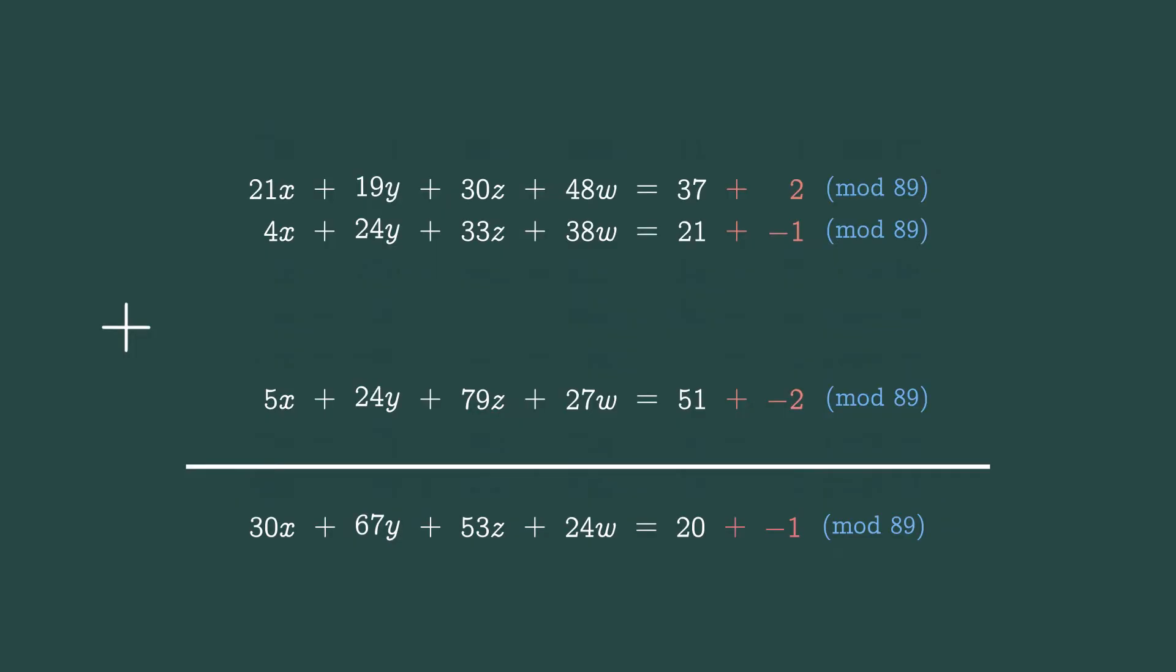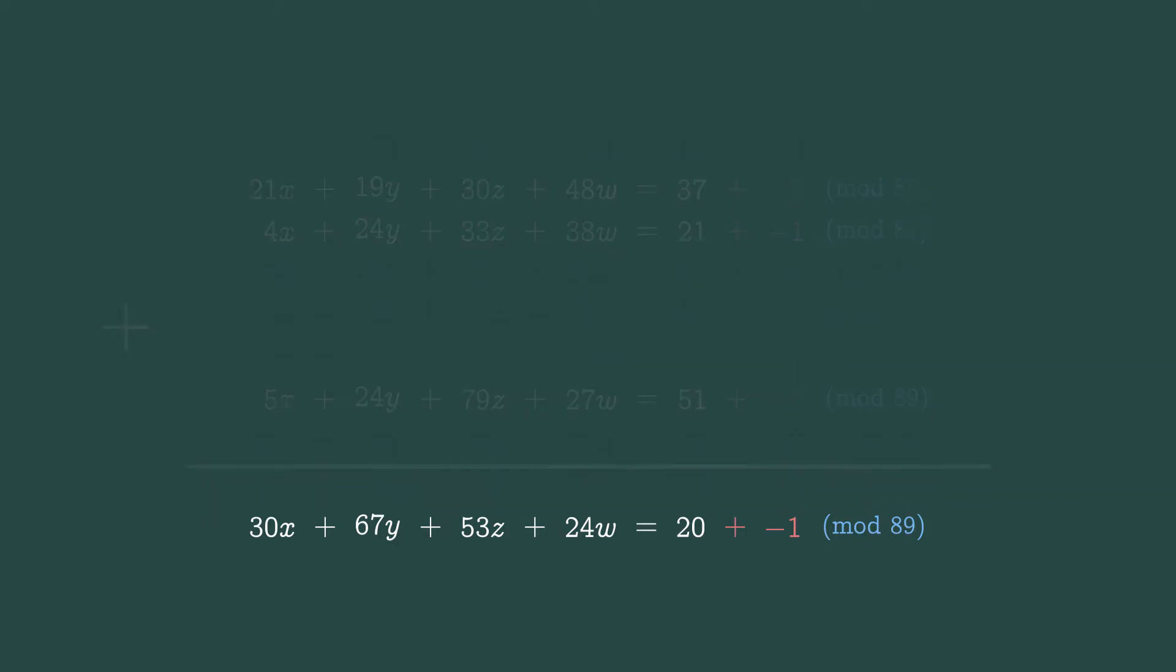Remember, all the addition is happening mod 89. If we ignore the errors, Alice's secret vector was a solution to each of the equations that we added together. So it's also a solution to the new equation, the one we got from adding the others.